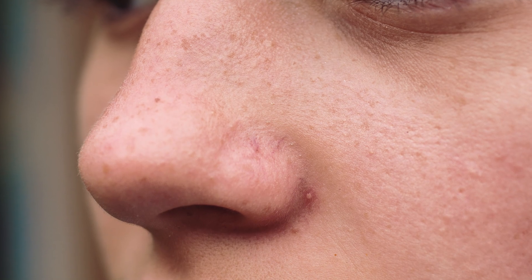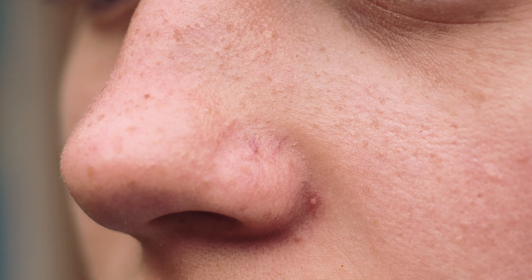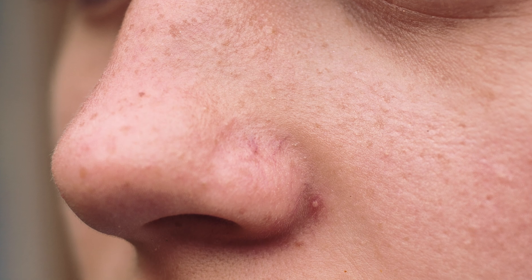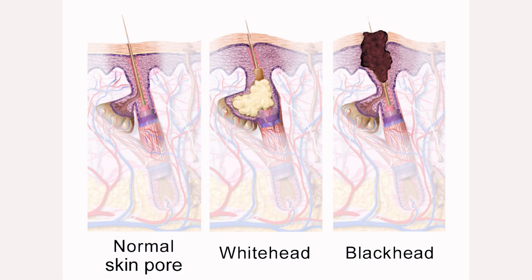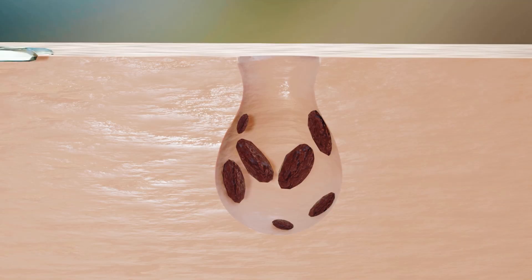While sebaceous filaments are light grey or yellowish in colour and have a softer texture, blackheads are darker in colour and have a firmer consistency. Sebaceous filaments are a normal part of the skin's physiology and serve a vital function in maintaining skin health, whereas blackheads are a type of acne lesion caused by the oxidation of sebum and dead skin cells trapped in the pores.